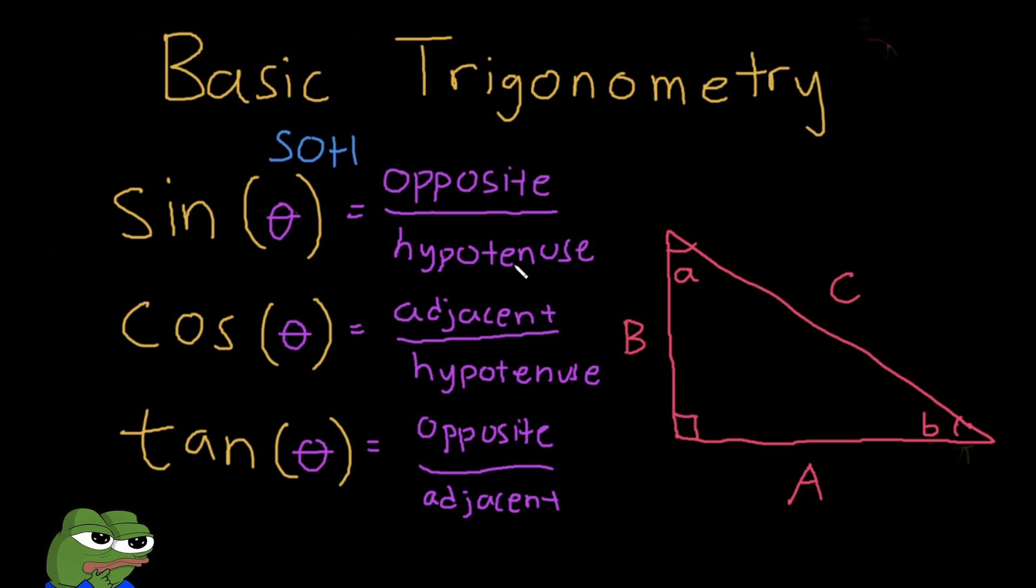You can remember this as CAH. For tangent, it takes in another angle theta and it outputs the opposite over adjacent side. That's TOA.